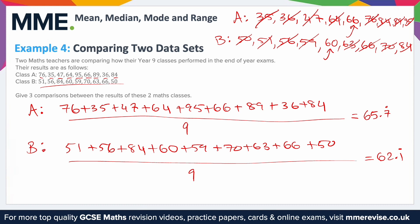The third comparison is the range. For class A, range is the biggest take away the smallest — from the ordered list, that's 95 minus 35, giving a range of 60. For class B, the biggest was 84 and the smallest was 50, so 84 minus 50 gives a range of 34. The range is a measure of spread: class A's students were more varied, with some performing really well and some not so well, whereas class B were closer to each other and more similar in performance. But overall, class A performed better on average and class B was slightly worse on average.